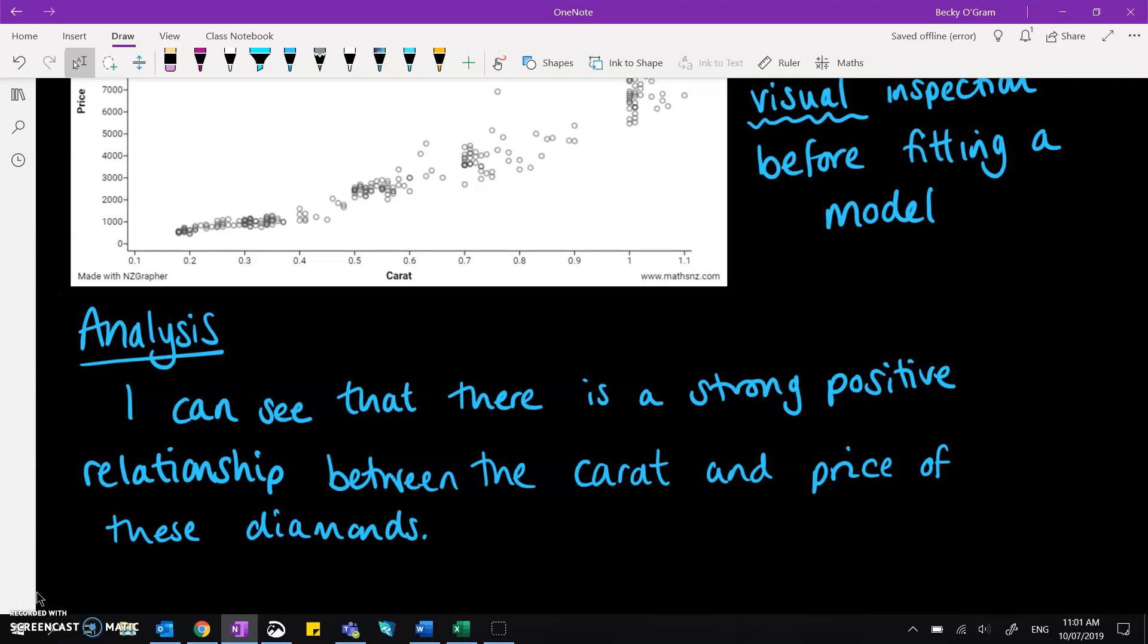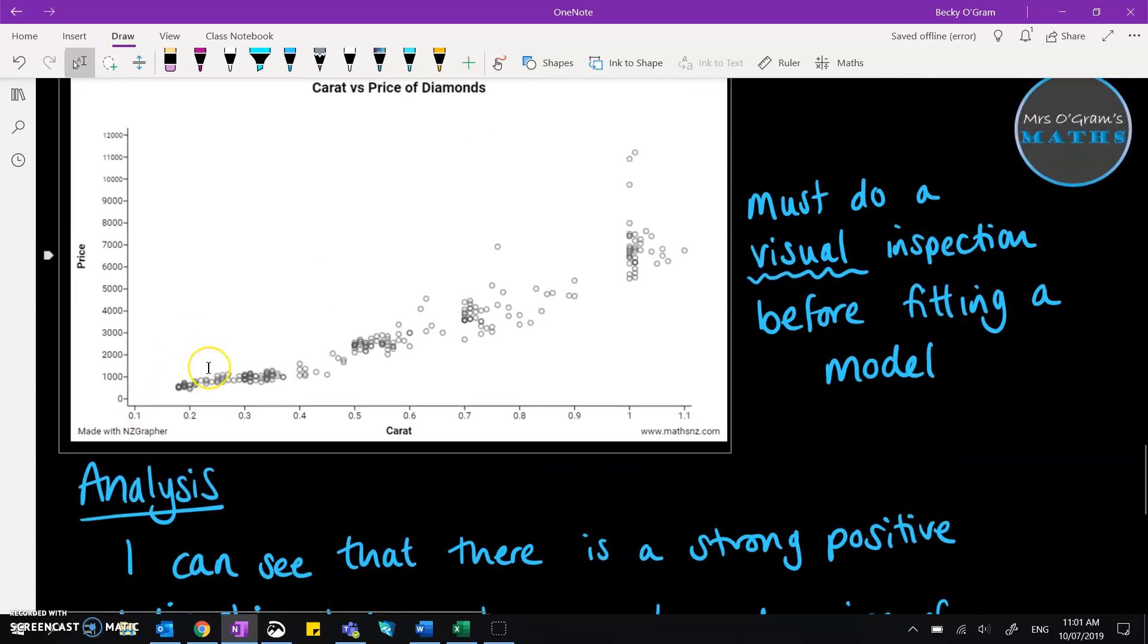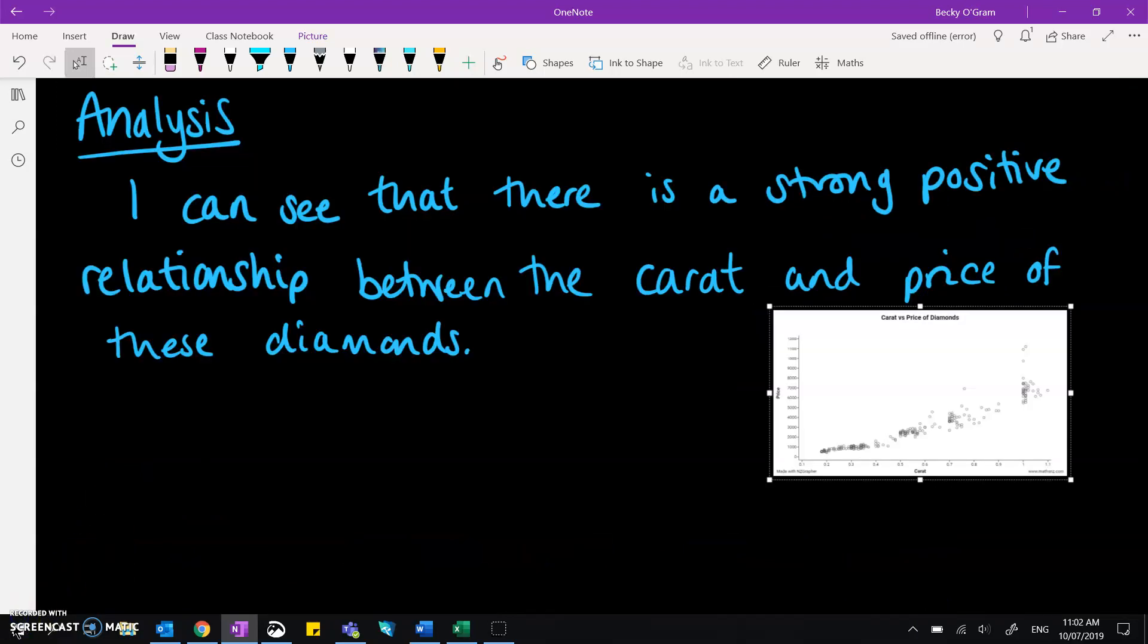That's your very basic sentence for this first visual inspection, but there's more that we can do about this. So if we just look back up at the graph, we should then think about whether we think that that relationship is linear or not. Now,